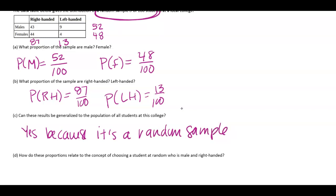And so I'm going to say here, yes, because it's a random sample. And so therefore, if I were to randomly choose any student from the population, I might be able to just use this proportion as a guide for what that probability might be. So if I want to try to find a student at random who is male and right-handed, well, then I could say that that's probably pretty stinking close to 43 out of 100.